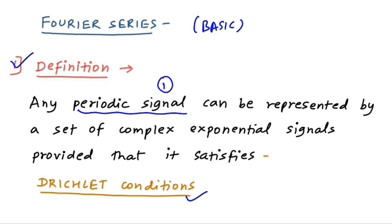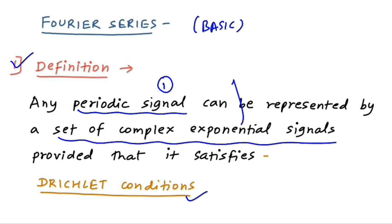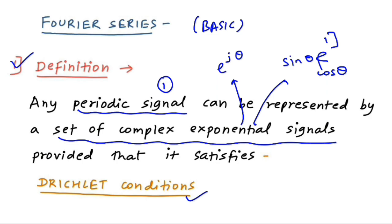You can represent a periodic signal in the form of a set of complex exponential signals. We have two types: you can use complex exponential signals, or represent it in terms of sine and cosine — the trigonometric form of the Fourier series — or the exponential form. To convert a periodic signal to either form, the signal must satisfy the Dirichlet condition.